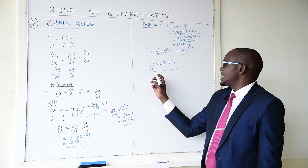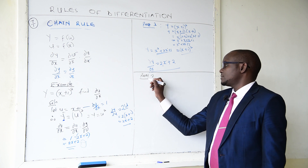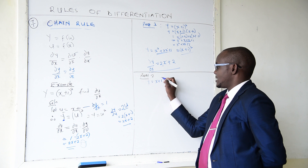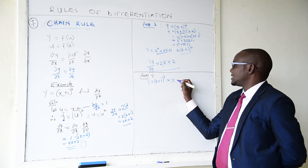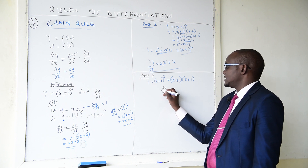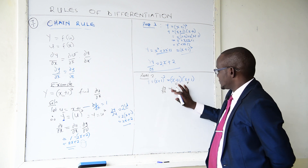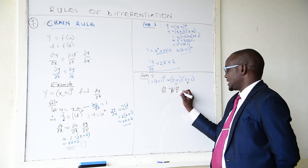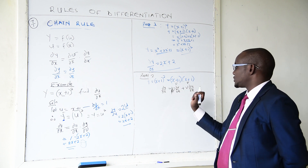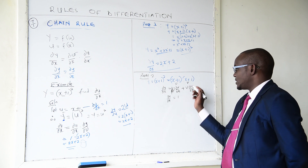We can also prove the chain rule using the product rule. Given y equals (x+1) squared, this is the same as (x+1)(x+1). In the product rule, dy/dx equals u times dv/dx plus v times du/dx. Letting u equal x plus 1 and v equal x plus 1, then dv/dx equals 1 and du/dx equals 1.